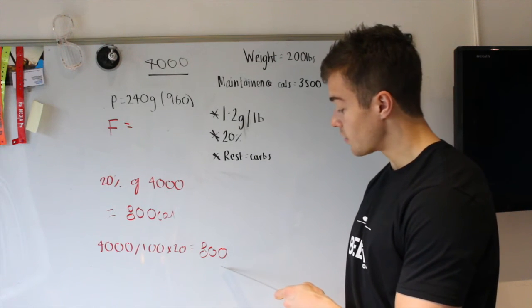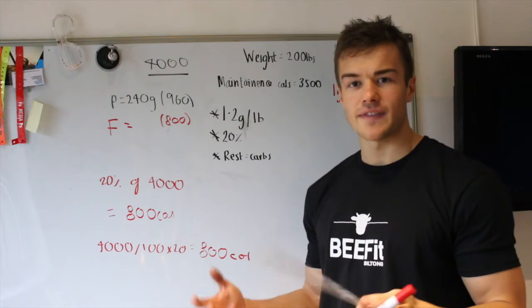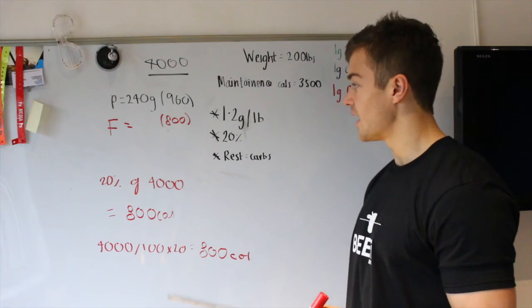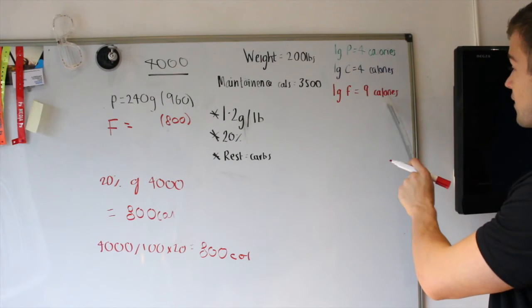So, 800 calories of 4,000 will be from fats. But how many grams of fat is that? How many grams of fat do I need to eat a day? So, we're going to go back to here. In 1 gram of fat, there is 9 calories.